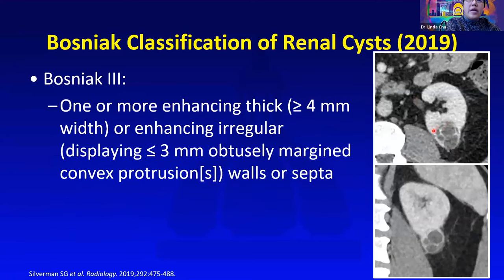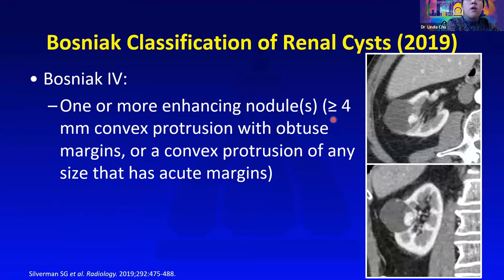Bosniak 3 lesions have thicker internal septations, or mural nodules that are obtusely marginated. By the time you get to Bosniak 4, you have enhancing mural nodules that are very suspicious for RCC.